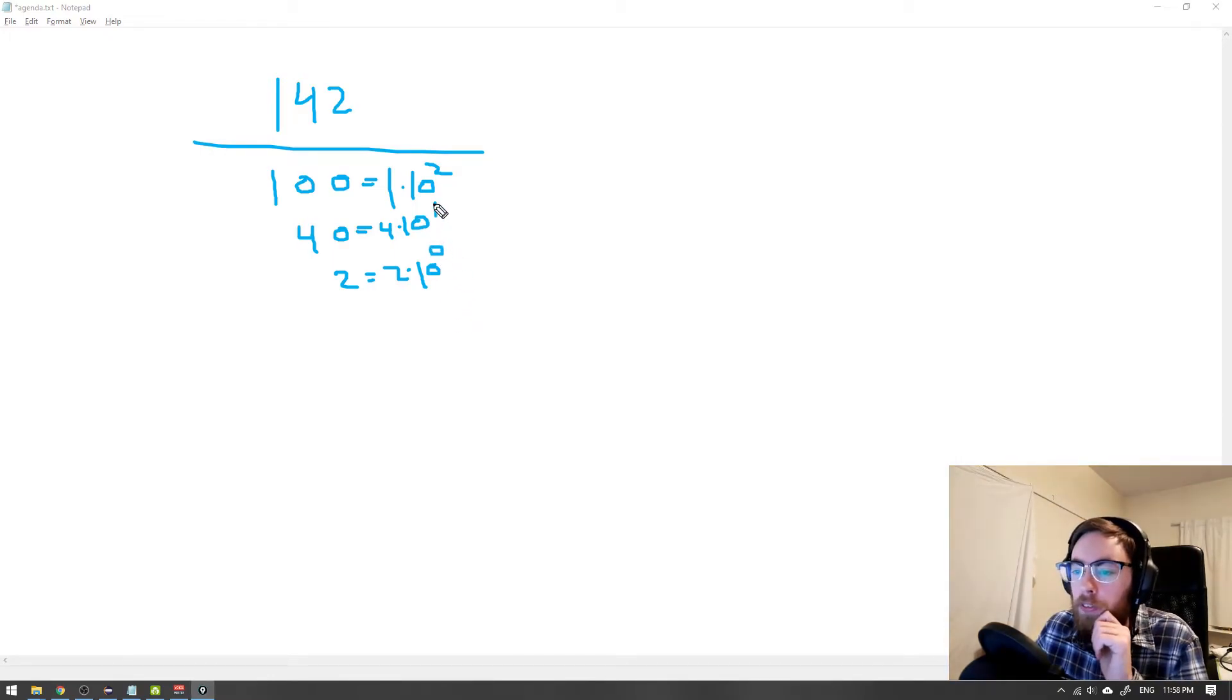We have 0 and then 1 and 2. So for 2 here, we can just write 0 on top here. And then for 1, meaning for 4, we can write 1 here. And for 100, we can write 2 above it. So this order here, or position, tells each number how valuable it is.